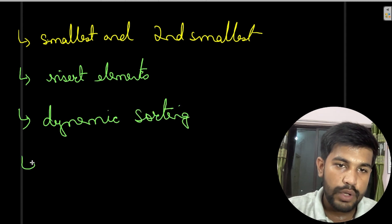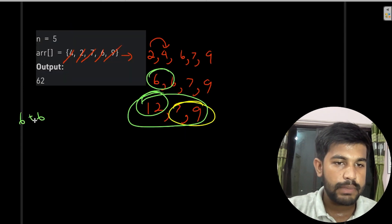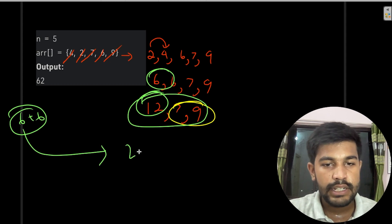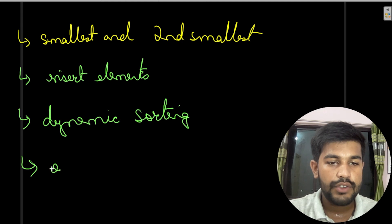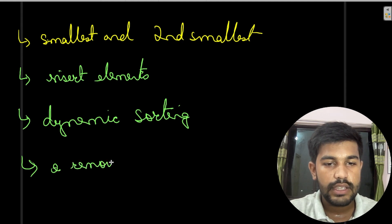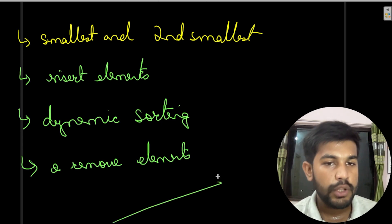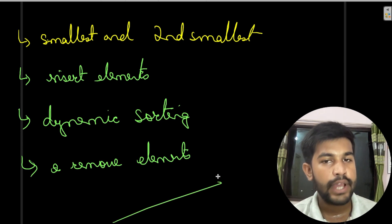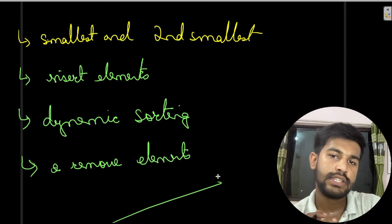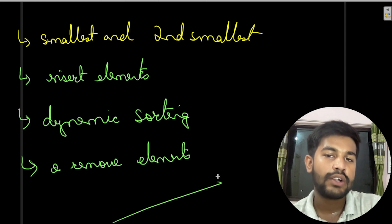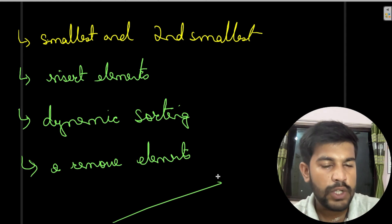We need removal, insertion, dynamic sorting, and access to the smallest and second smallest at each step. All these criteria are fulfilled by the data structure known as the priority queue. So we would move forward with the priority queue, and at each point we would get the smallest and second smallest, combine them, and repeat.